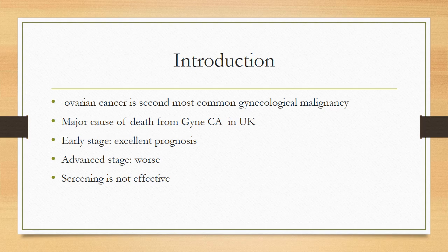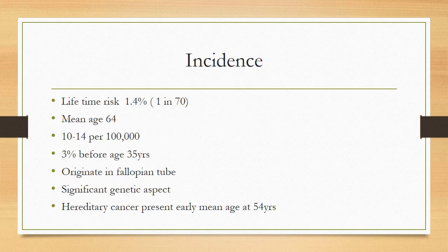If it presents at an earlier stage, prognosis is good, because most of the time this cancer presents at advanced stage. The lifetime risk is 1.4%, so if there are 70 ladies in this room, one is going to get ovarian cancer. The mean age of presentation is 64 years, similar to endometrial cancer. Incidence is 10 to 14 per 100,000 women worldwide. Only 3% of ladies present before 35 years of age.